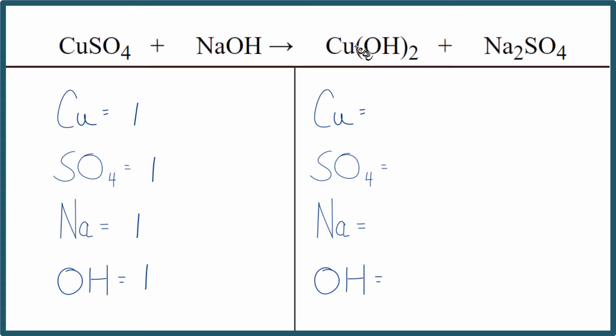On the product side, we have one copper, the sulfate, we have one sulfate ion, two sodium atoms, and then one hydroxide times two. So we have two hydroxides.